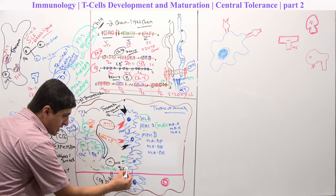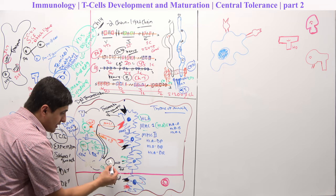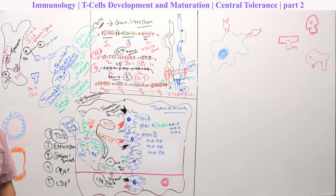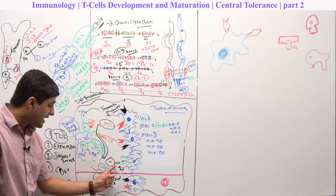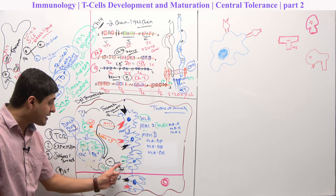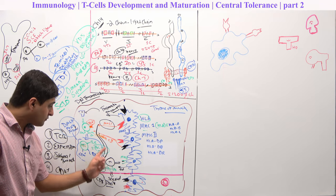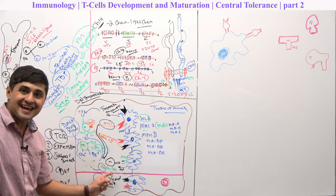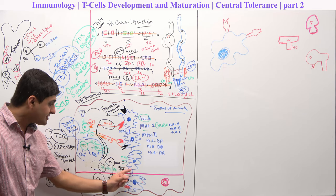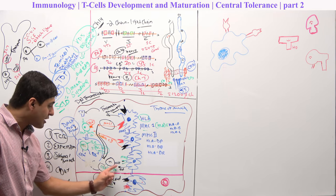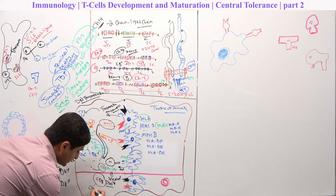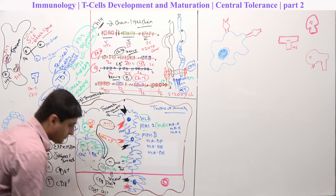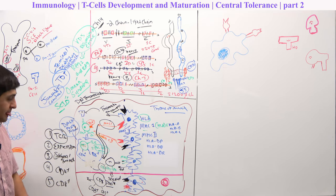These cells will release a product that will down-regulate the CD4 positive marker. So if MHC1 is weakly bound — low affinity binding with MHC1 — these T cells will be selected as CD8 cytotoxic cells, and the thymic epithelium will secrete a product that down-regulates the CD4 positive cells. These cells will then be CD8 positive cells with CD3 and a T cell receptor. This is called positive selection.